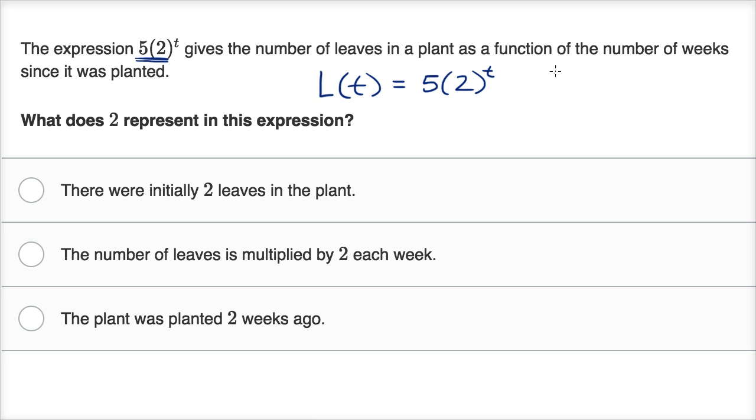And so we could try this out a little bit. If we say, well, what is L of zero? That would be t equals zero. That's when we're zero weeks after it was planted. So this is right when it was planted. Well, that's five times two to the zero, which is just, two to the zero is just one, so it's equal to five.